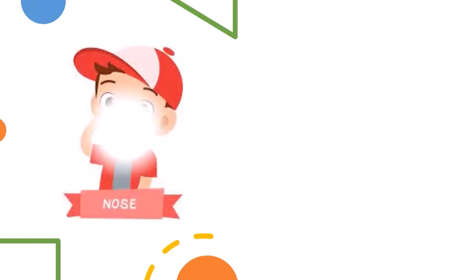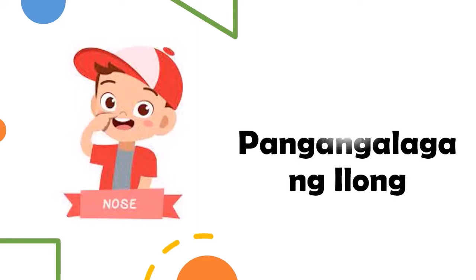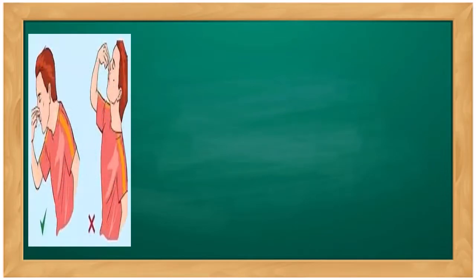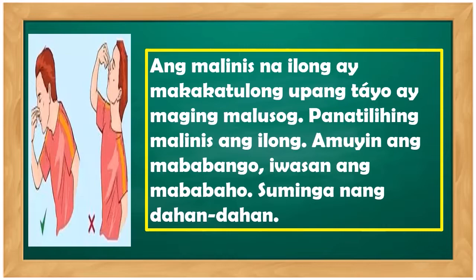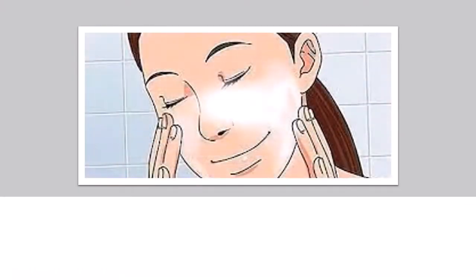Kasunod, ang pangangalaga ng ating ilong. Ang malinis na ilong ay makakatulong upang tayo ay maging malusog. Panatilihing malinis ang ilong, amuyin ang mababango, iwasan ang mababaho. Suminga ng dahan-dahan — huwag bigla-bigla ang singa kung may sipon, kasi kapag dumuga ang sipon, mahirap at masakit ang iyong ilong.